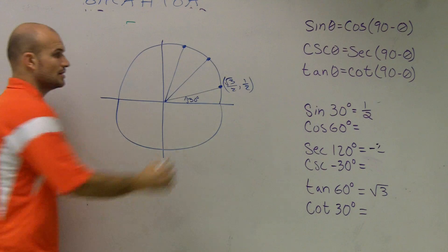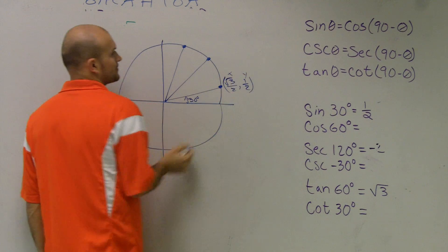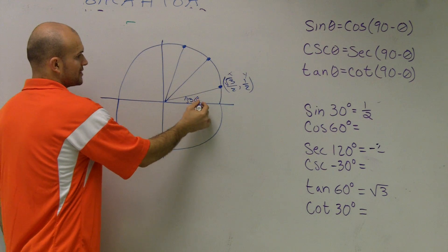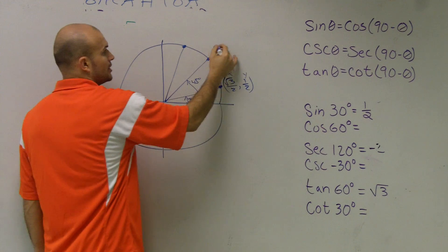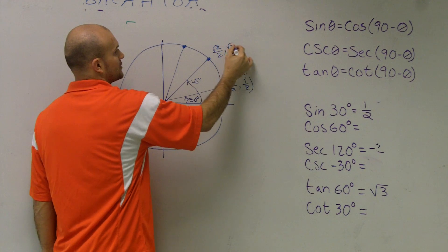Where this is your x and that's your y. On a 45 degree angle, it was radical 2 over 2 comma radical 2 over 2.